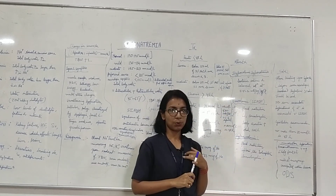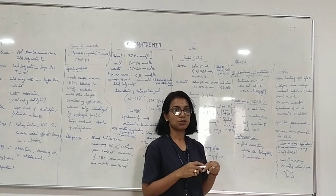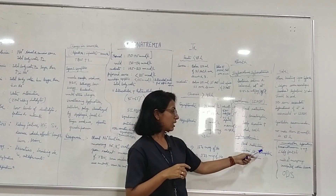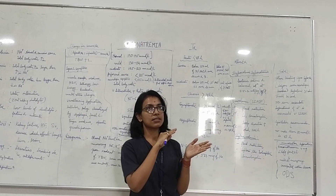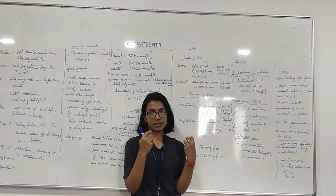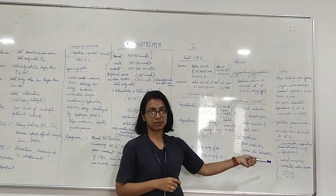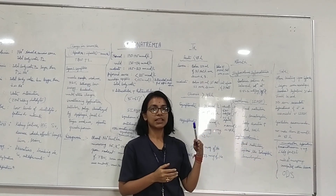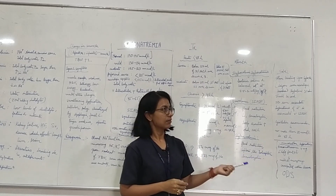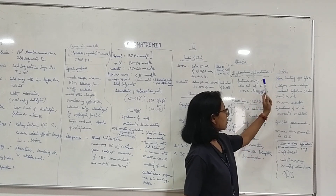For hypervolemic hyponatremia, restrict fluid. The drug tolvaptan, a V2 receptor antagonist and ADH antagonist, is used. Since ADH's function is water retention, tolvaptan blocks that mechanism so there is no water retention in the body. Demeclocycline is also used along with this.